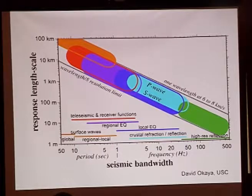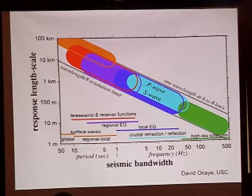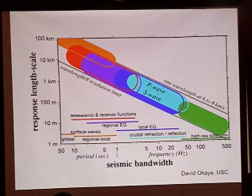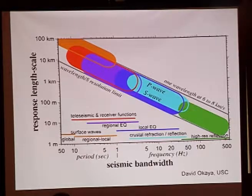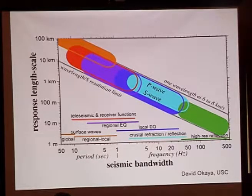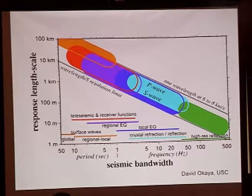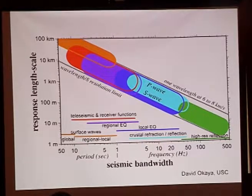One of the ultimate goals of seismologists is to combine everything and image all different wavelengths and scales of structures in one location — we haven't quite gotten there yet. The broadest band seismometers used in passive situations can go from tens of hertz to hundreds of seconds, which is what we call broadband seismology.